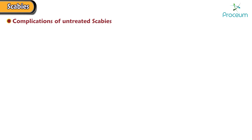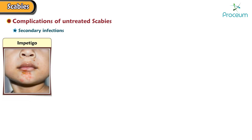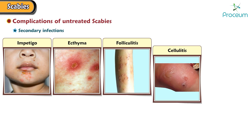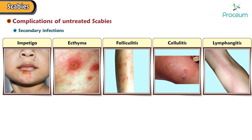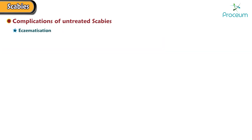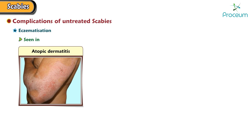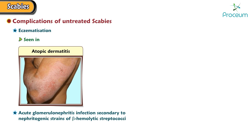Let's finish off by covering the complications of untreated scabies. There may be secondary infections such as impetigo, ecthyma, folliculitis, cellulitis, and lymphangitis. There may also be eczematization, which is commonly seen in patients with atopic dermatitis. It can cause acute glomerulonephritis secondary to nephrogenic strains of beta-hemolytic streptococci. Norwegian scabies can lead to erythroderma. Thank you for listening to this module about scabies.